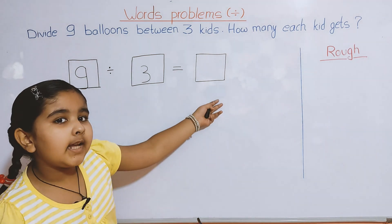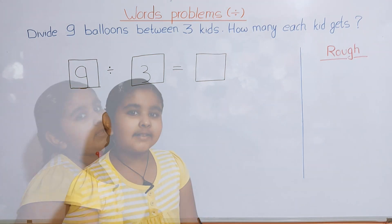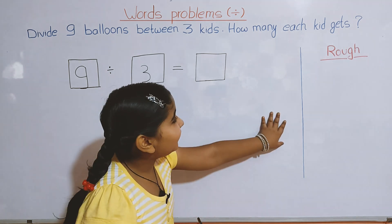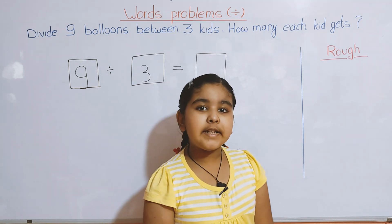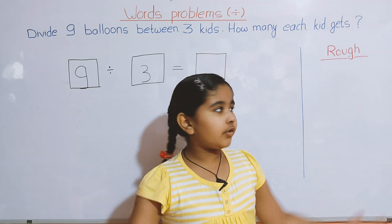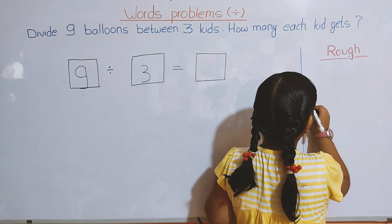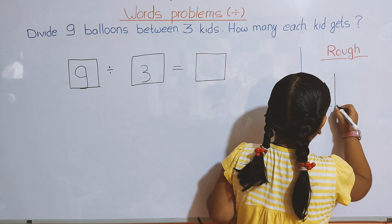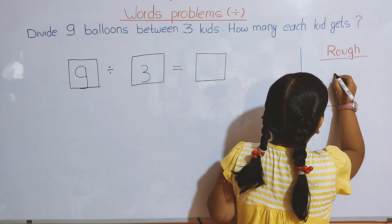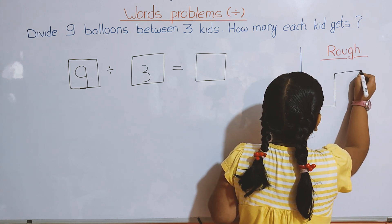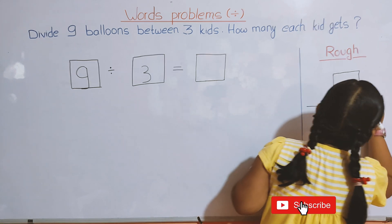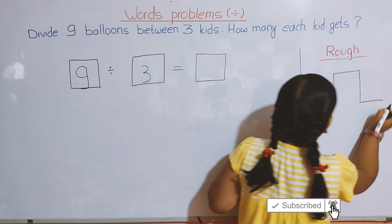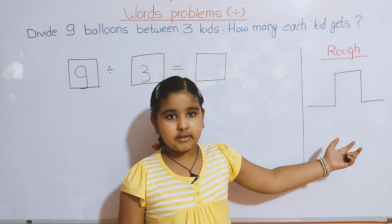Now, what can be the answer? Let's go to rough work. In rough work, we have to make a big door - the division symbol. So we have made the door.